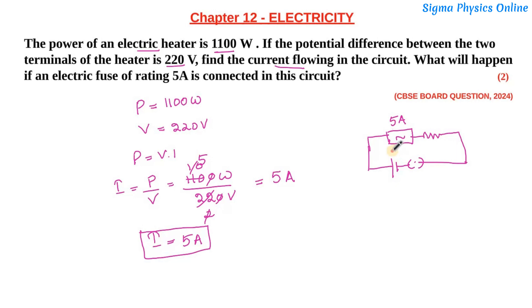Now this fuse has a rating of 5 ampere. That means if the current exceeds 5 ampere, this fuse will blow. Now the current flowing in this circuit is 5 ampere. So this fuse will allow a maximum current of 5 ampere to flow through it, and if the current exceeds 5 ampere, this fuse will blow.